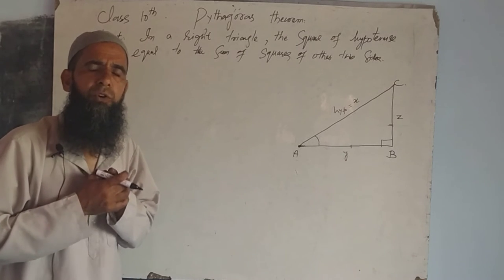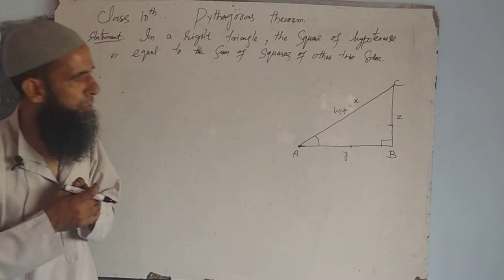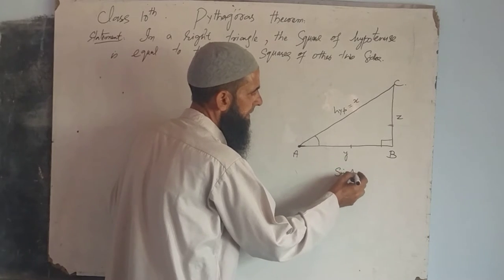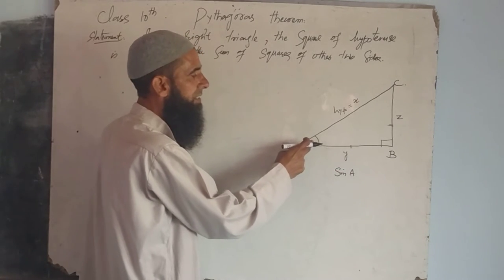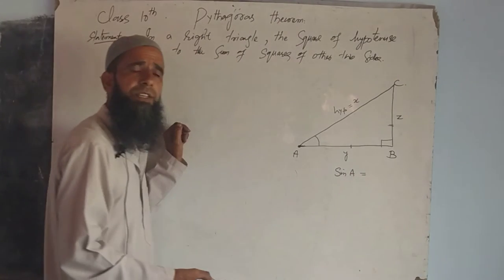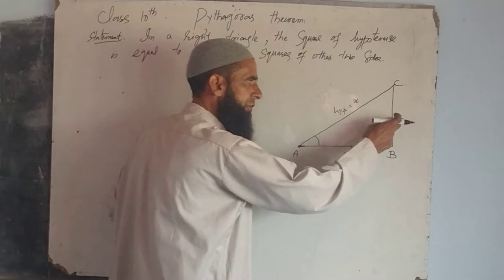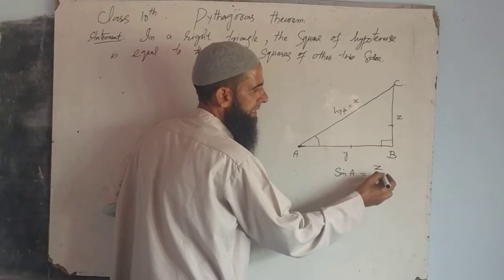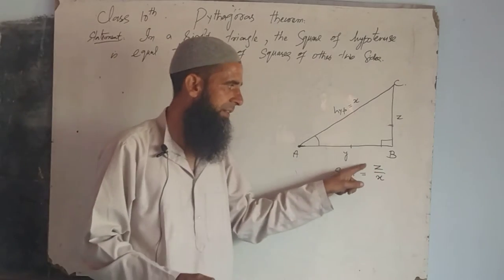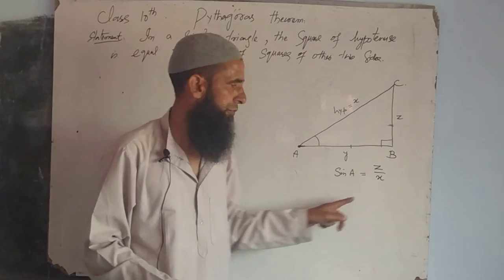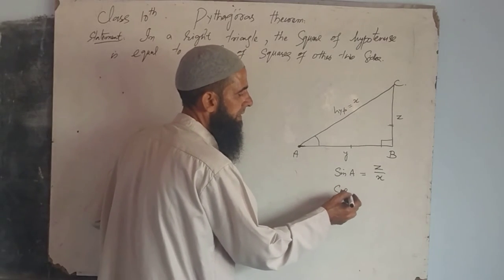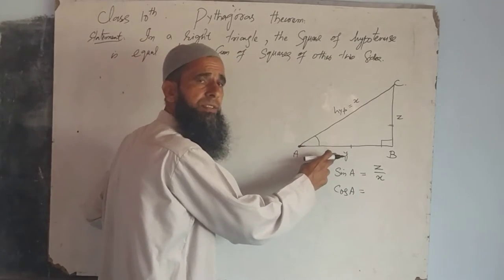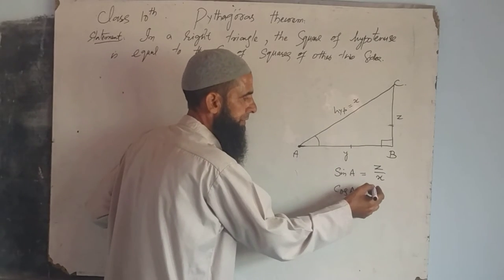We know by trigonometric ratios, we have here sin A. That is equal to the opposite side divided by the hypotenuse, that is Z by X. Similarly, cos A for the same angle is the adjacent side divided by the hypotenuse, that is Y by X.